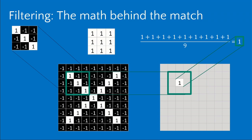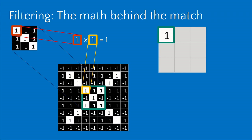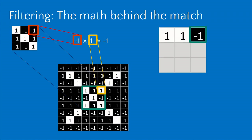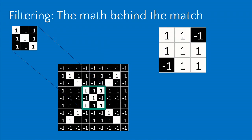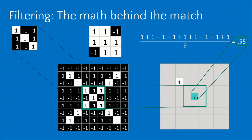Because the feature and patch are a perfect match, every pixel multiplication returns one. We add up all nine ones, divide by nine, and get a match of one. We create an array to keep track of how well the feature placed at each position matches our image. If we move the feature to the center of the X, some pixels don't match — a minus one times a plus one gives minus one — and adding everything up and dividing by nine gives 0.55, indicating a partial match.